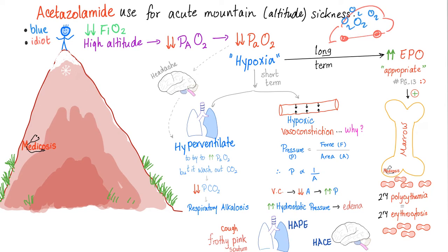EPO will send a dispatch to the bone marrow to announce a surge — more red blood cells head out. We call this erythrocytosis. Is this an appropriate or inappropriate increase of EPO? It's appropriate — because of hypoxia. That's the job of EPO. EPO stimulates the bone marrow, the bone marrow secretes red blood cells. This is called secondary polycythemia, which is the exact same thing as secondary erythrocytosis. Poly means many, cythemia means cells in blood — lots of red blood cells. Same exact thing. We're done with the long term.